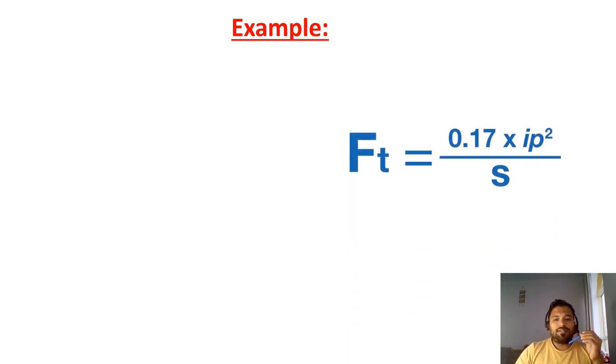So now we will be seeing one example which shows that calculation process. So I am considering this formula. I am considering trefoil format. If you want to choose a flat format, just replace 0.17 with 0.16. So here peak short circuit current I consider as 50 kA. So there is a cable diameter, 35 mm square. So I converted into meter, that is divided by 1000, that is equal to 0.035 meters.